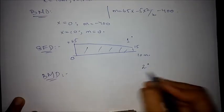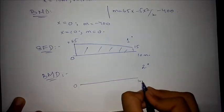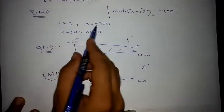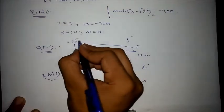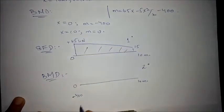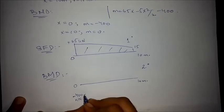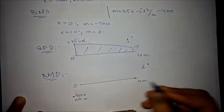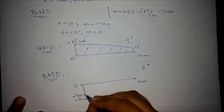The bending moment diagram has 0 and 10 meters on the axis. At x equals 0, the moment was minus 400 kilonewton meter, and at x equals 10, the moment is equal to 0. We join these points with a curve.